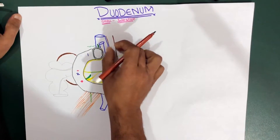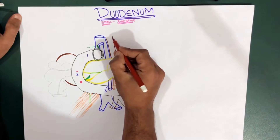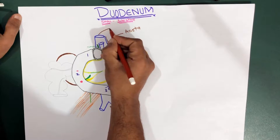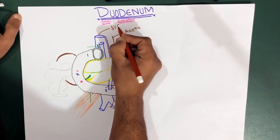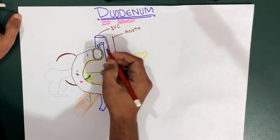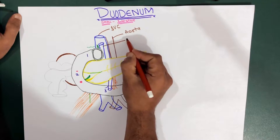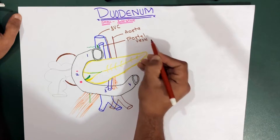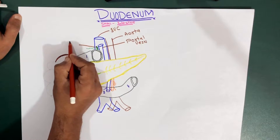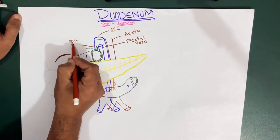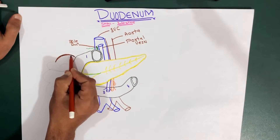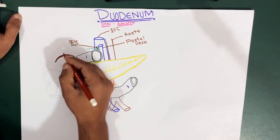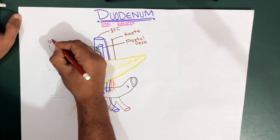This long structure that starts here and ends here is the aorta. This is the inferior vena cava. In front of the inferior vena cava we have the portal vein, and nearby we have the bile duct. This big structure over here is the right kidney, and this large structure which goes posterior to it is part of the large intestine.